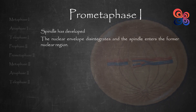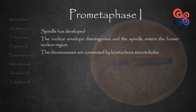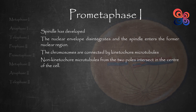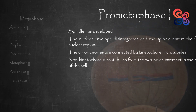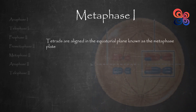The nuclear envelope disintegrates during the beginning of prometaphase 1, and the spindle enters the former nuclear region. The chromosomes are connected by kinetochore microtubules, which attach to the sister kinetochores of one duplicated chromosome from one pole, and the sister kinetochores of the other duplicated chromosome from the other pole. The sister chromatids of one homolog attach to microtubules leading to one spindle pole, whereas the sister chromatids of the other homolog attach to microtubules going to the opposite pole. Non-kinetochore microtubules from the two poles intersect in the center of the cell. Tetrads are aligned in the equatorial plane, known as the metaphase plate, situated between the two spindle poles, via movements of the kinetochore microtubules.